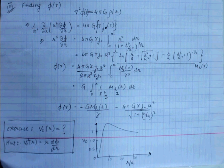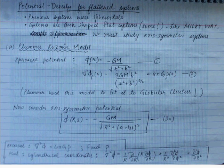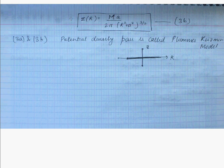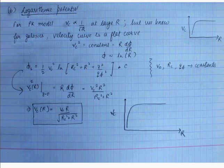I hope you tried to calculate the circular velocity for such a system — it was a straightforward exercise. Then we moved on to a very interesting topic: potential-density pairs for flattened systems. We saw two systems in particular: the Plummer-Kuzmin model, its gravitational potential in cylindrical coordinates, and the surface density of such a disk-like system. We also studied the logarithmic potential and saw how it gives us flat velocity curves that we actually observe in galaxies.